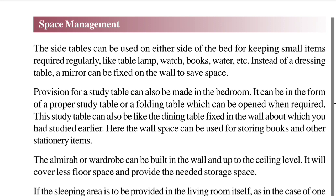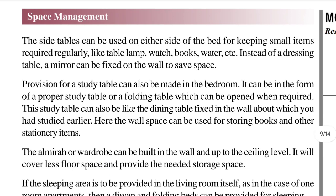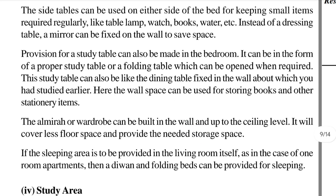Instead of a dressing table, a mirror can be fixed on the wall to save space. If you have a dressing table, you don't need to put it on the floor — fix the mirror on the wall and you will also save space. Similarly, you can keep side tables where you put a lamp and adjust small things.